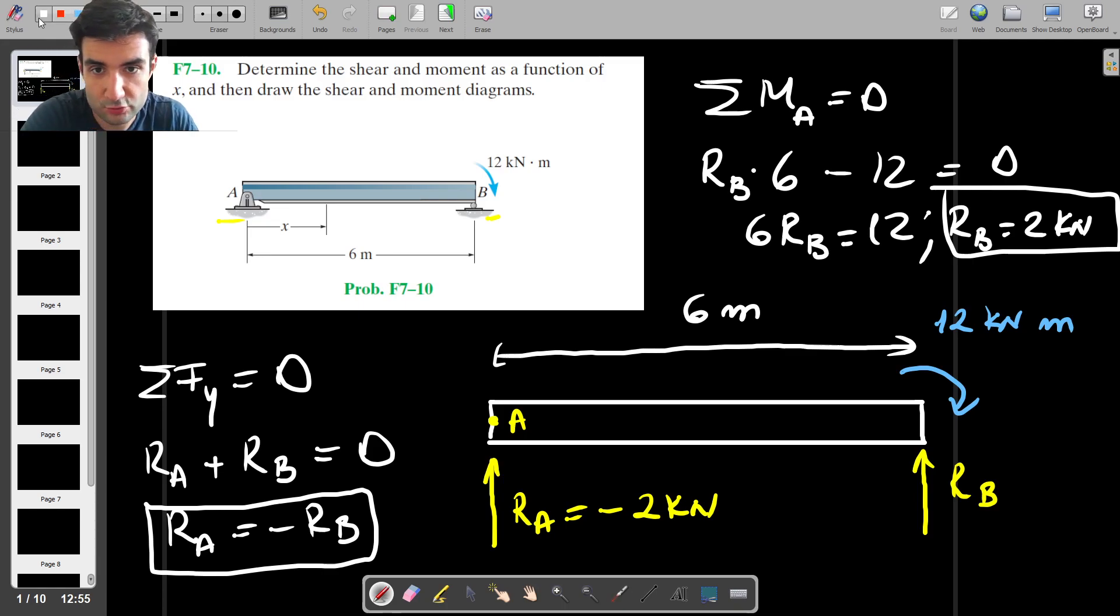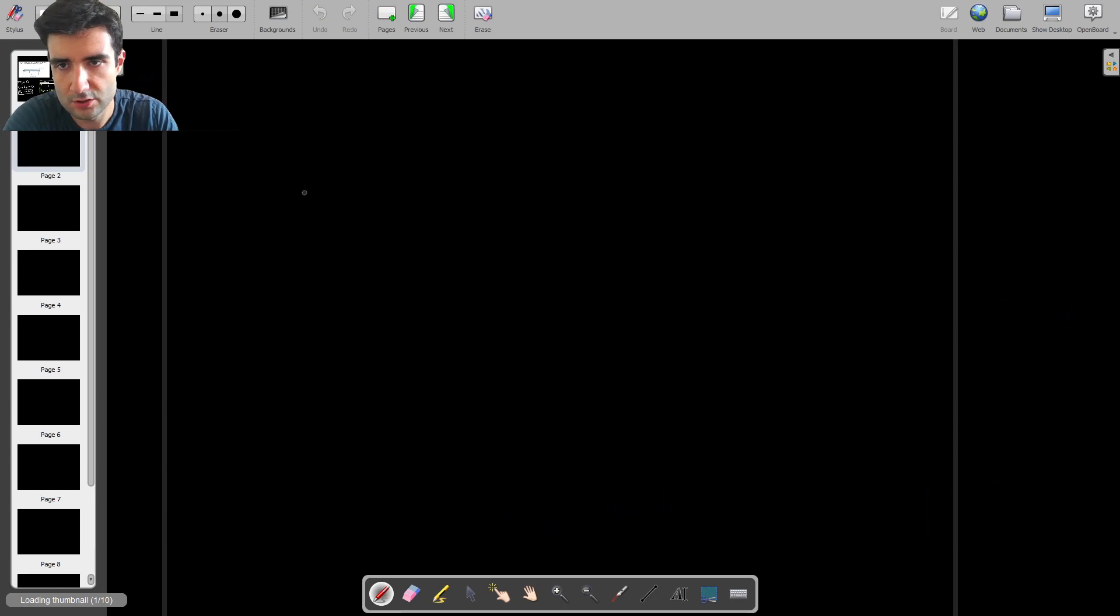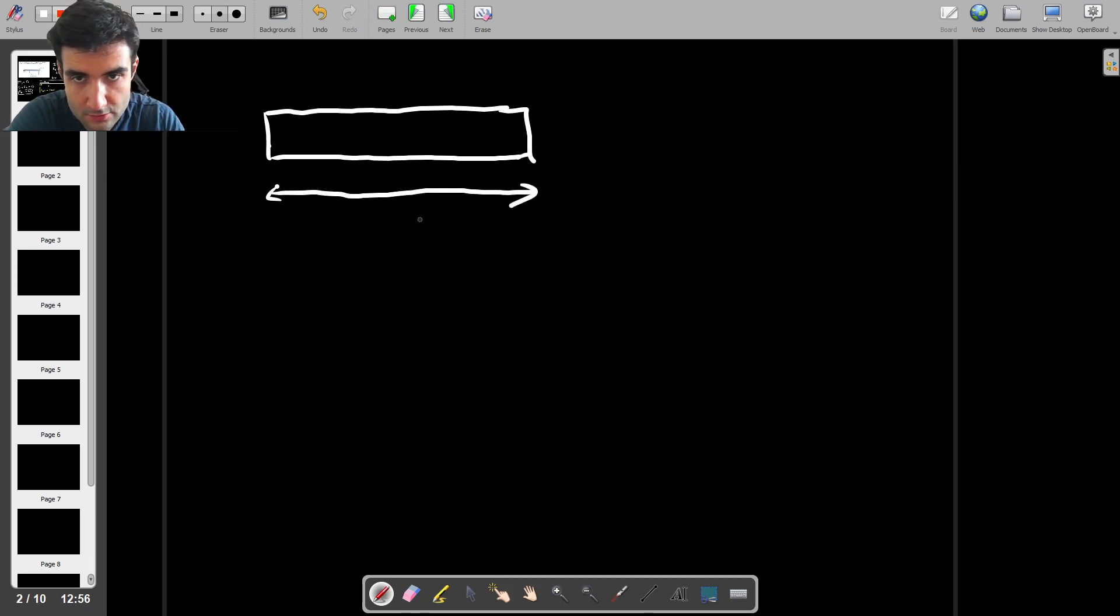Let's now try to find the internal shear force and the bending moment. We do that by taking a cross-section at a random distance x away from A. So I'm going to draw that separately here. Now we're going to do another free-body diagram, but only for that section, which has a length of x.